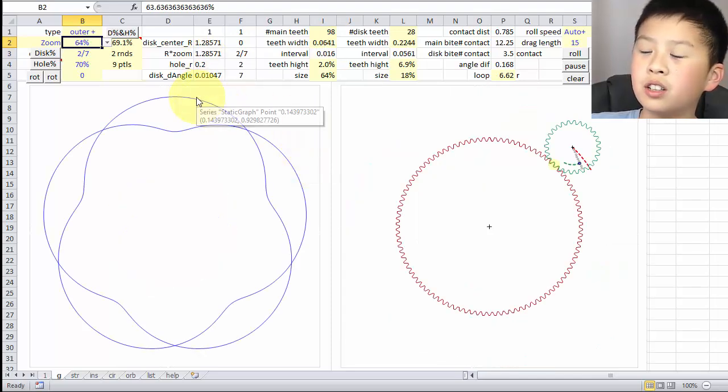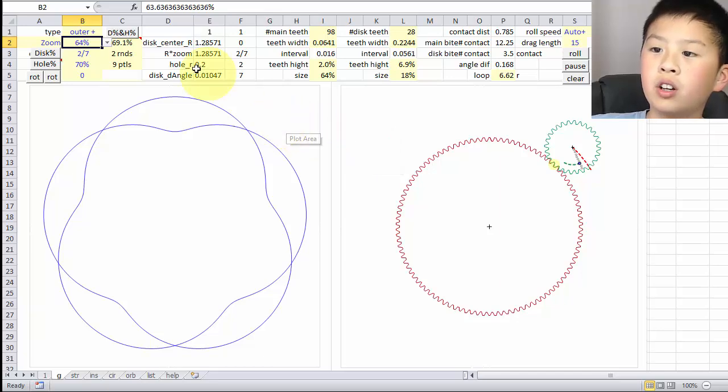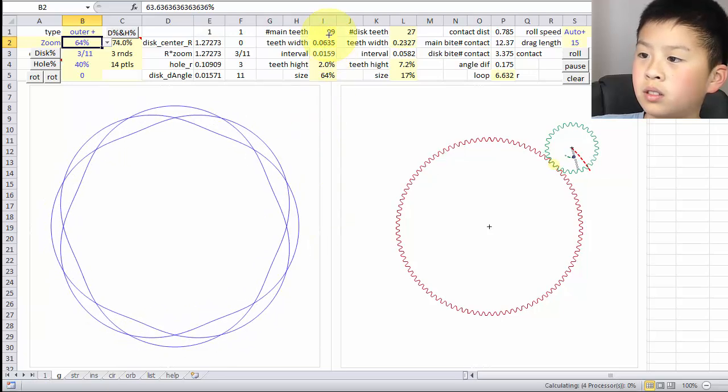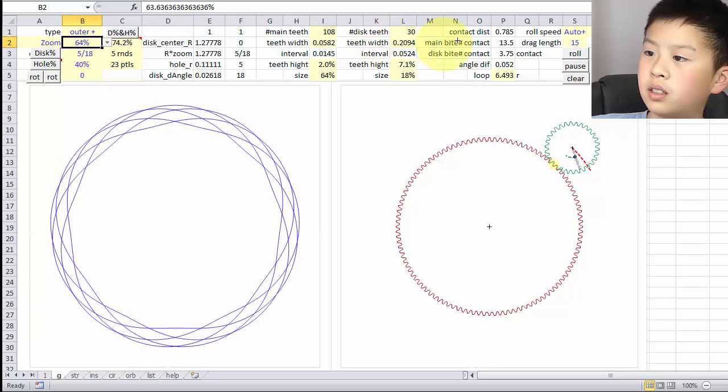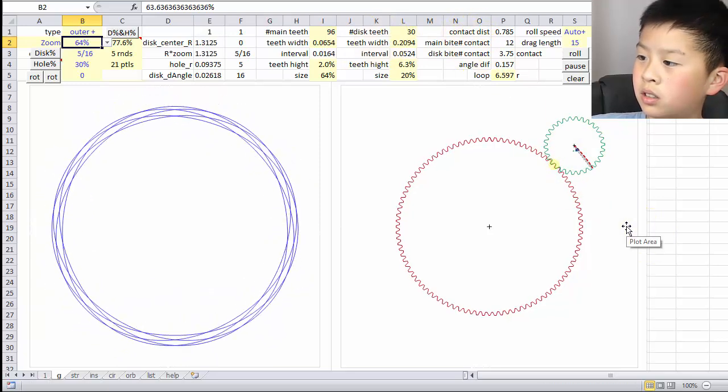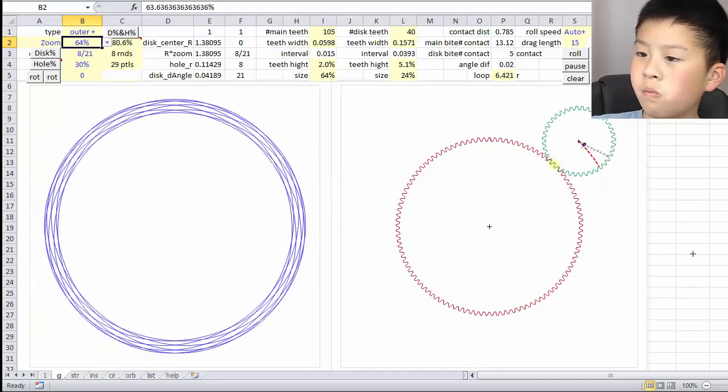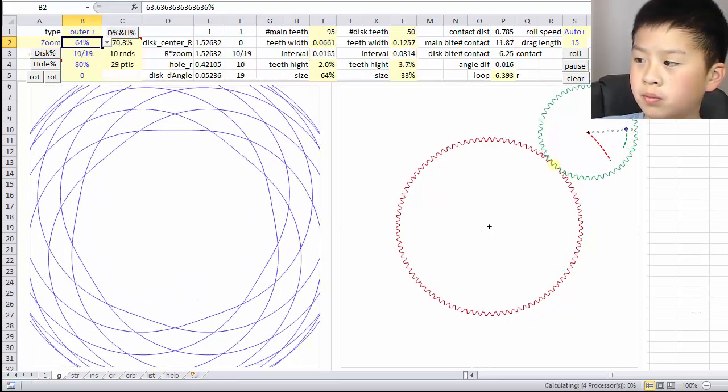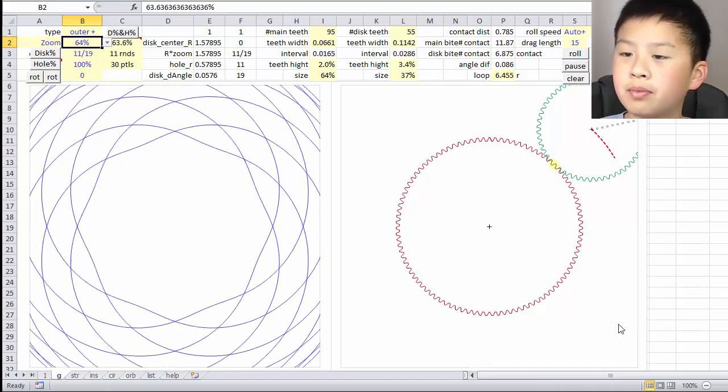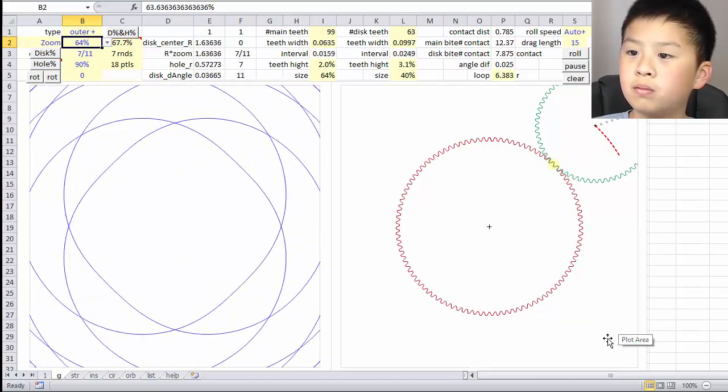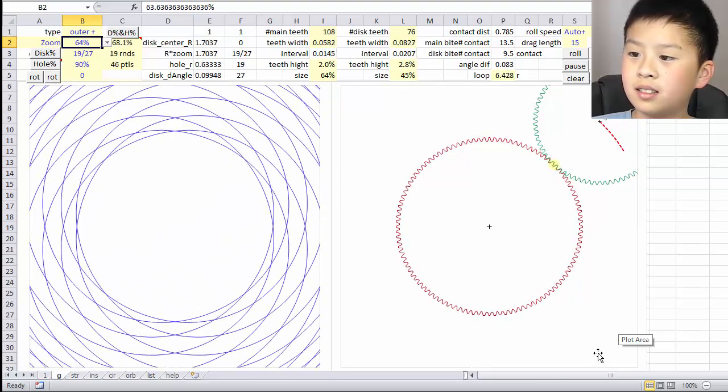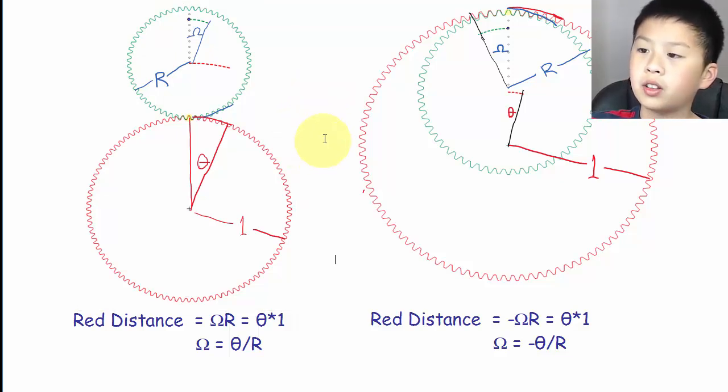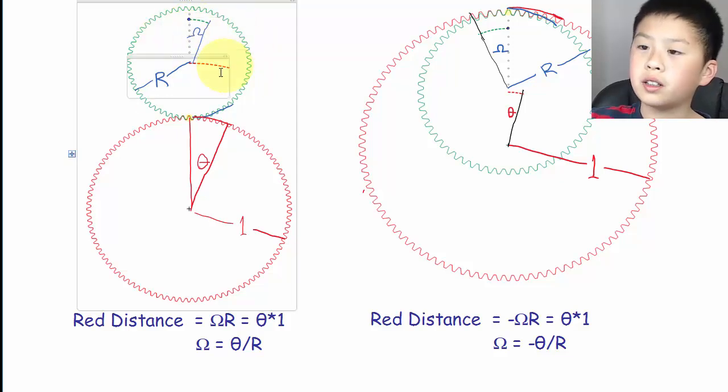Now I will show you what it looks like when it's in the outer ultimate mode. The main teeth numbers and disc are changing.